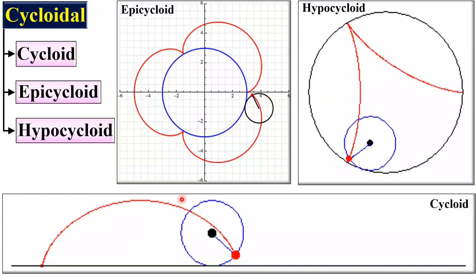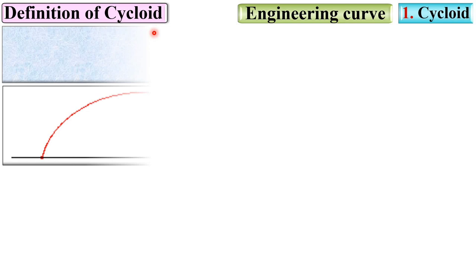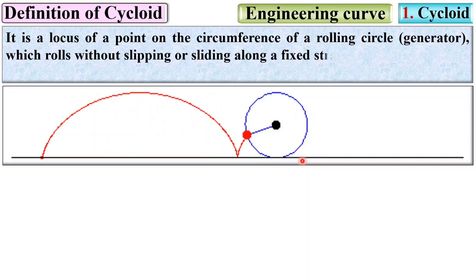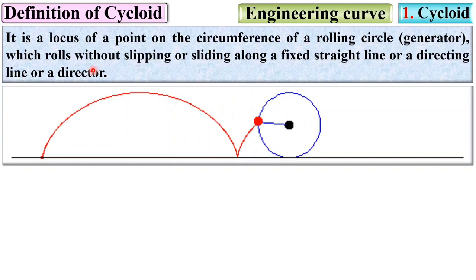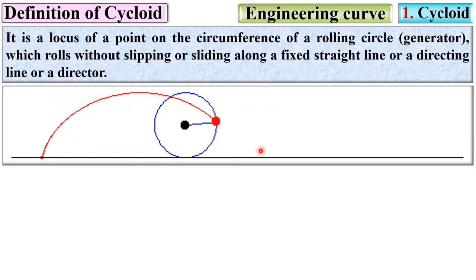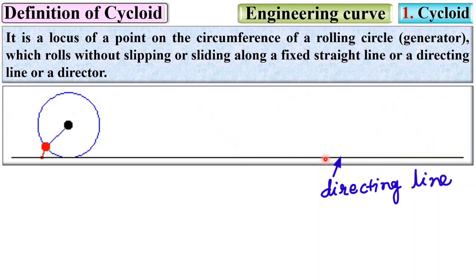Now let us start with the cycloid. The definition of cycloid: it is a locus of a point on the circumference of the rolling circle — sometimes known as the generator — which rolls without slipping or sliding along a fixed straight line, sometimes called the directing line or director.